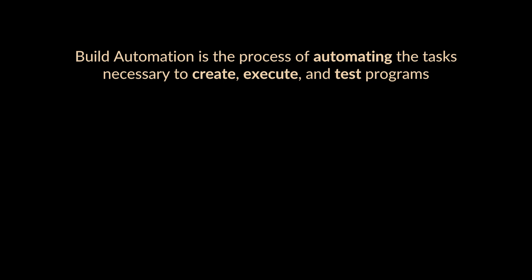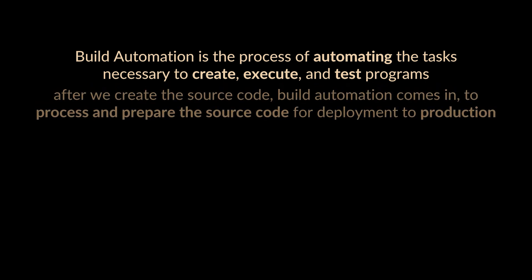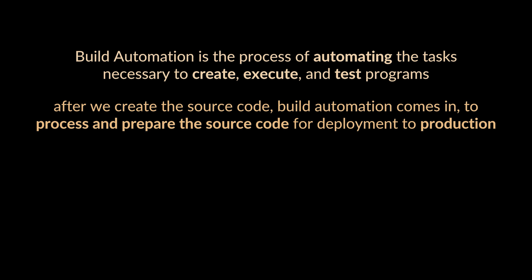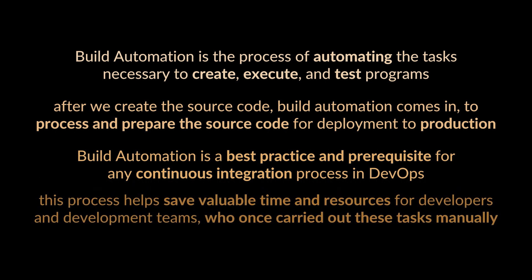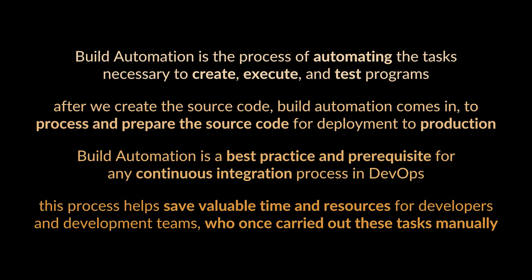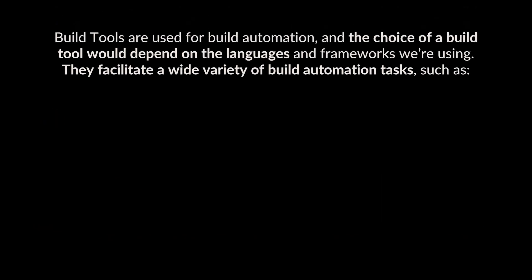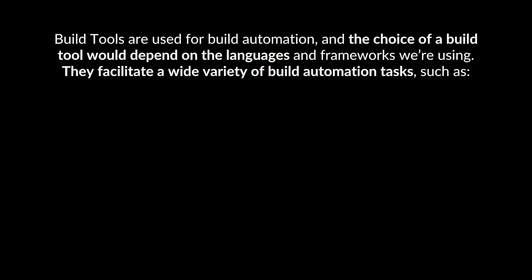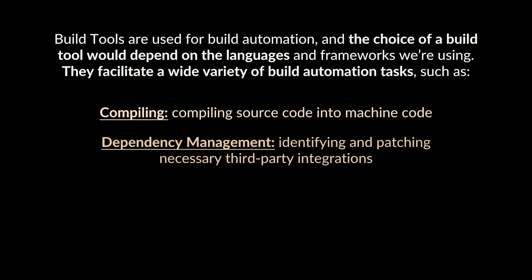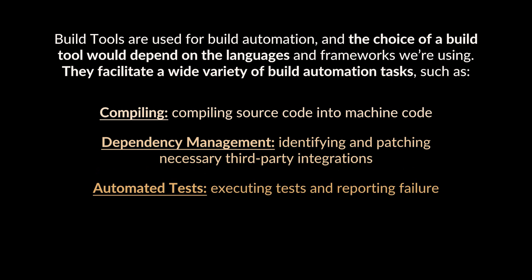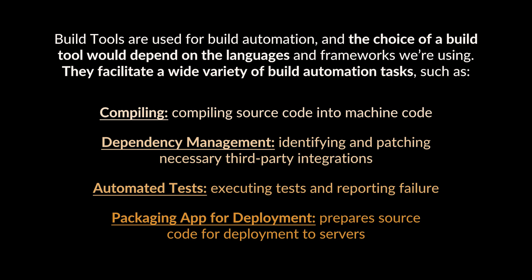To sum everything up: build automation is the process of automating the tasks necessary to create, execute, and test programs. After we create source code, build automation comes in to process and prepare it for deployment to production. It is a best practice and prerequisite for any continuous integration process in DevOps. Build tools facilitate tasks such as compiling source code into machine code, dependency management, identifying and patching necessary third-party integrations, executing automated tests, reporting failures, and packaging the application for deployment.